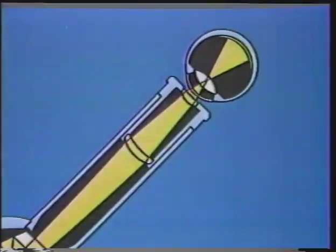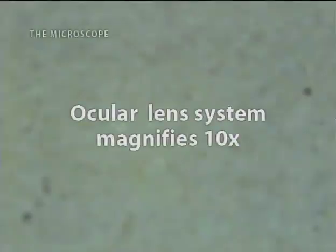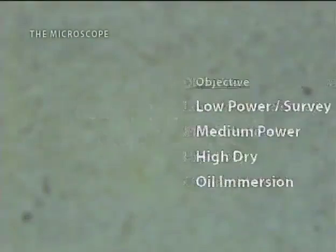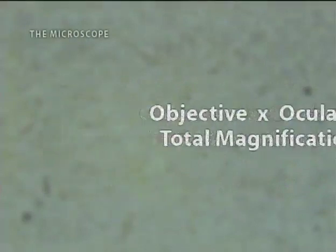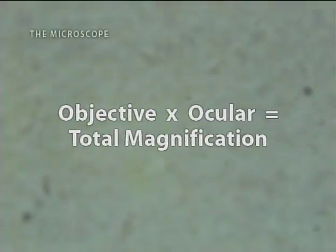The ocular lens system usually has a magnification of 10 times, whereas the objectives vary in their degree of magnification, ranging from 4 to 100 times. The result produced by multiplying the values of the two lens systems is called total magnification.